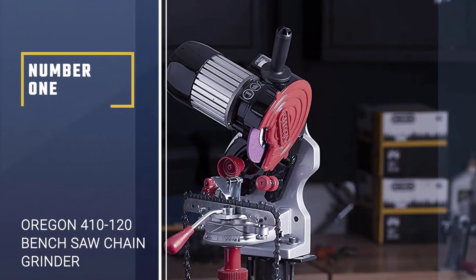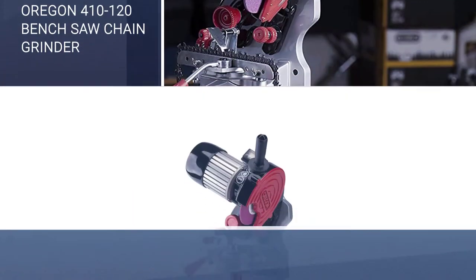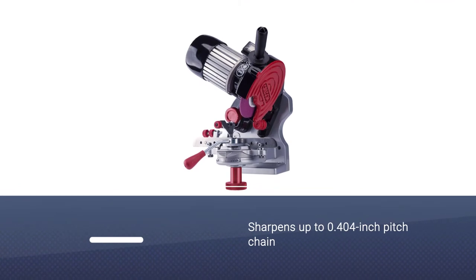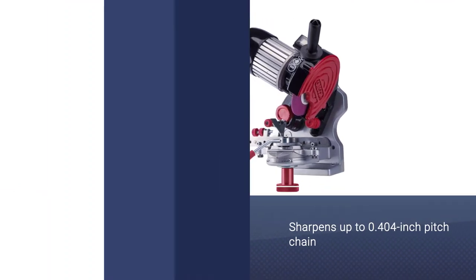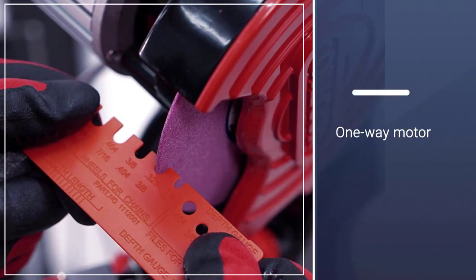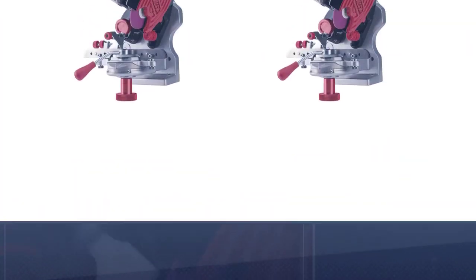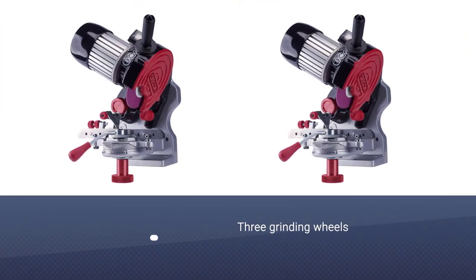Number 1. Oregon 410120 Bench or Wall Mounted Saw Chain Grinder. Our best choice for an electric chainsaw sharpener is the Oregon 410120 Saw Chain Grinder. This model can be mounted as a bench vise or on a wall securely and relatively easily, and the one-way motor helps to ensure safe operation, even for beginners.